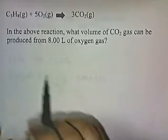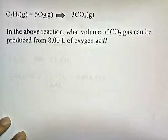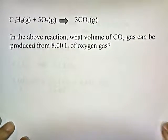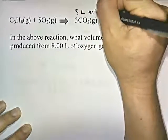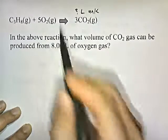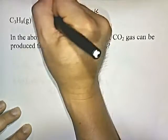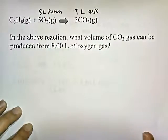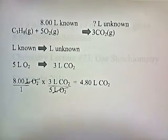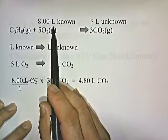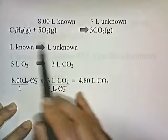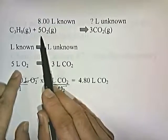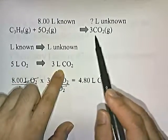Let's try this problem. Propane reacts with oxygen to produce carbon dioxide. What volume of carbon dioxide gas can be produced from 8 liters of oxygen gas? The unknown is liters of CO₂, and the known is 8 liters of oxygen. We're going to convert liters of known into liters of unknown. You just need to know the ratio of known to unknown by mole: 5 moles of O₂ will produce 3 moles of CO₂.